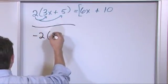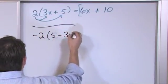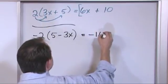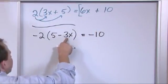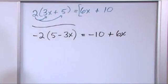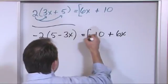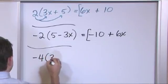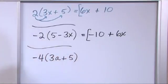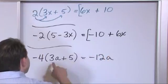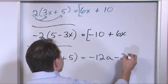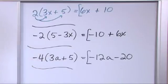What if I have negative 2 on the outside of (5 minus 3x)? I'm going to distribute this in. Negative two times five is negative ten. Negative two times negative 3x is positive 6x. You might want to add these together but you can't because they're not like terms, so the answer is negative 10 plus 6x.